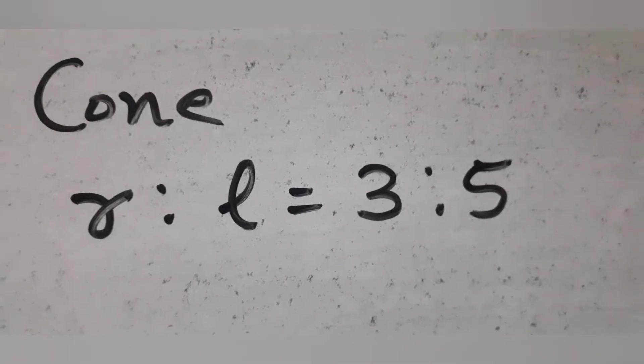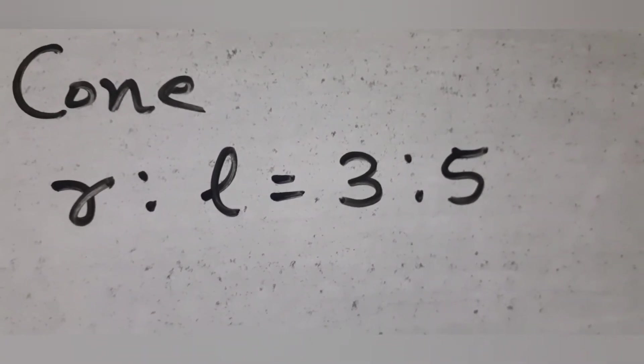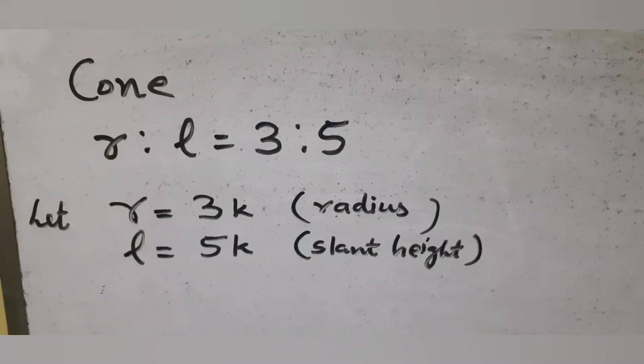For the cone, R is to L is given to be 3 is to 5, where L is the slant height, so we can take R equal to 3k and L equal to 5k.